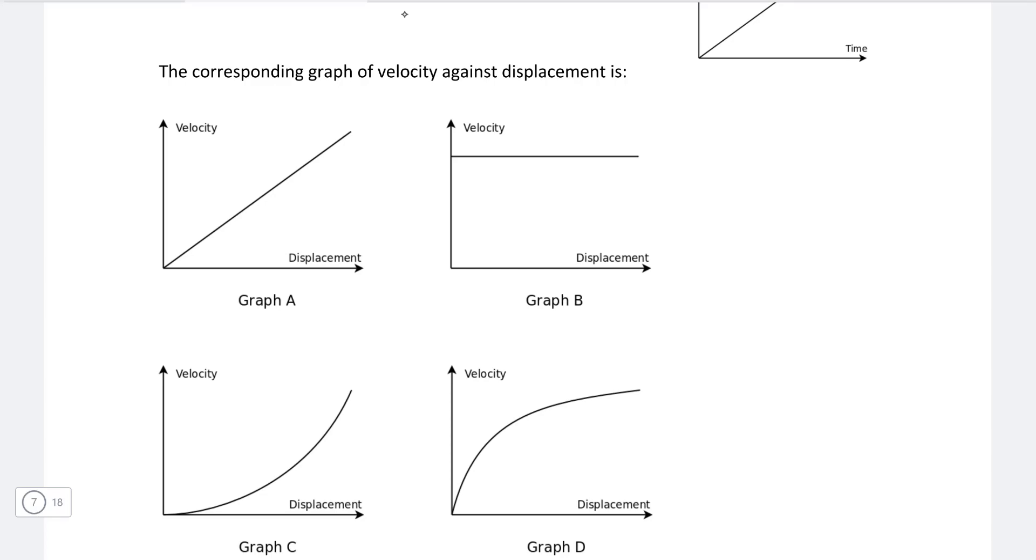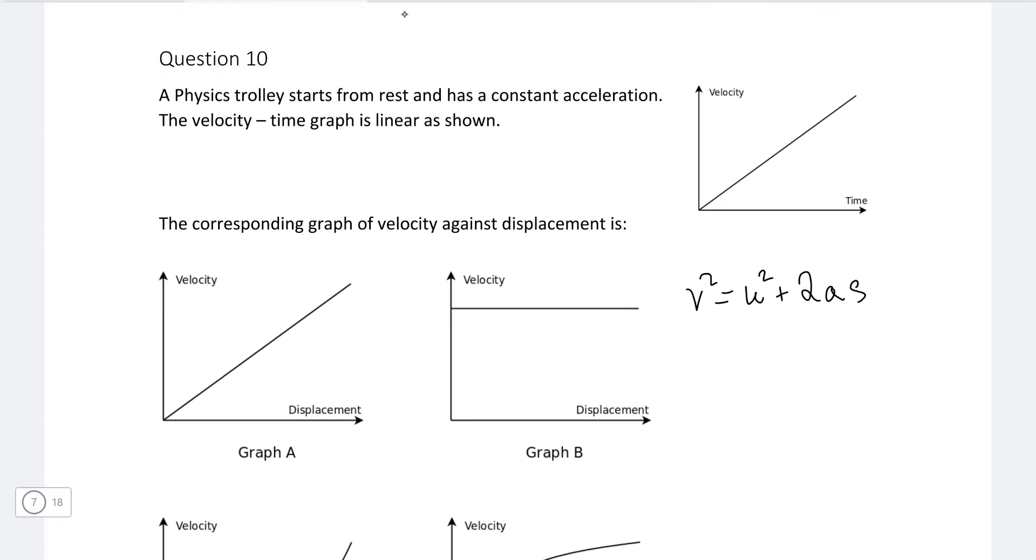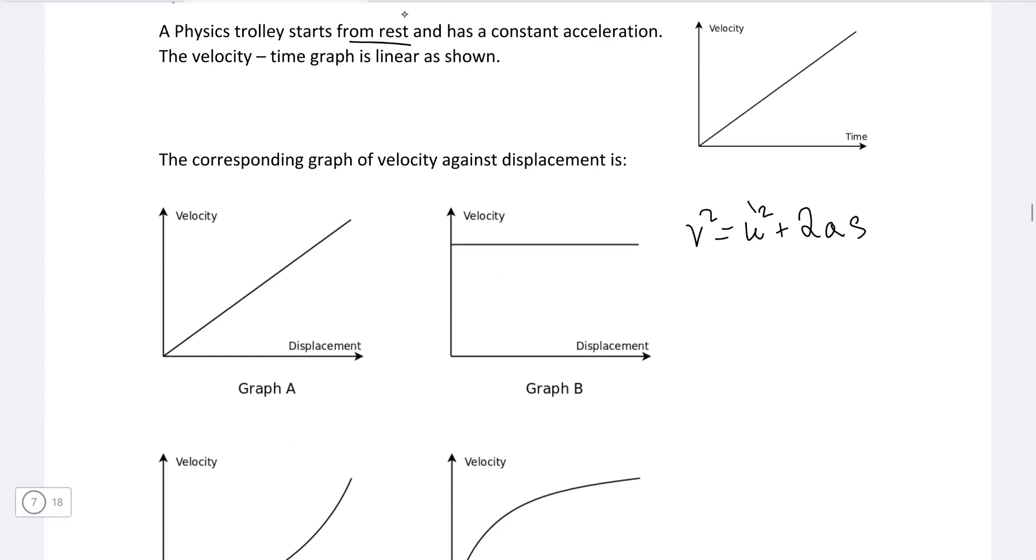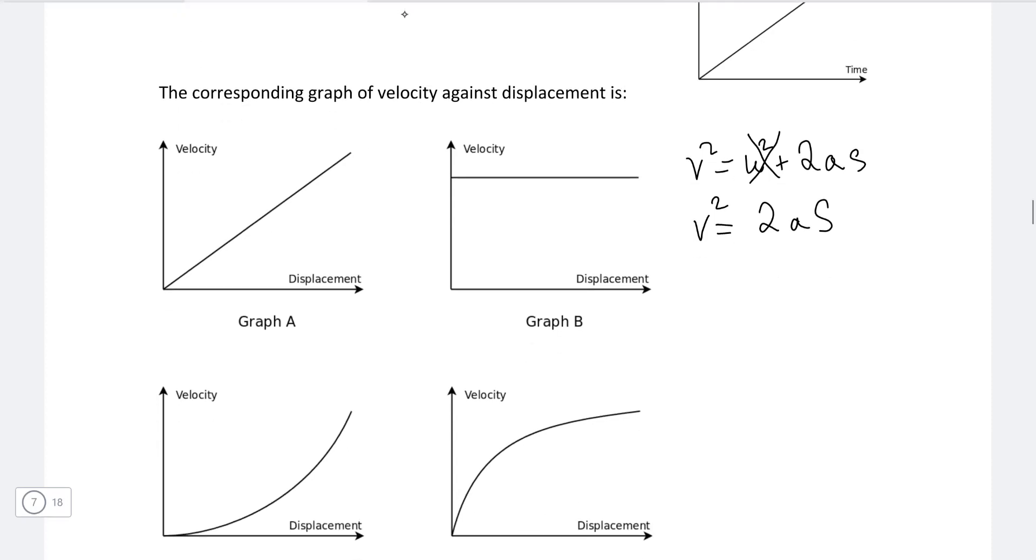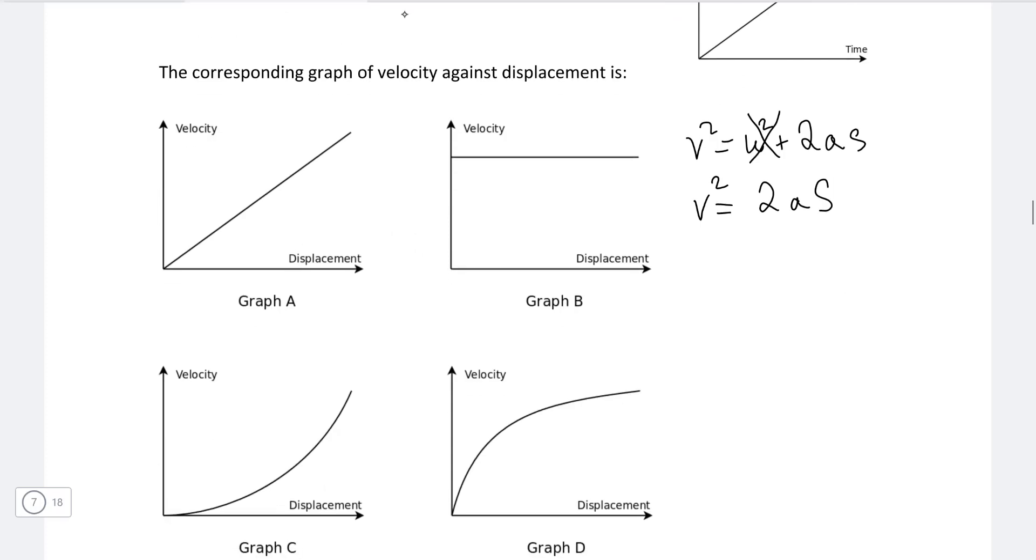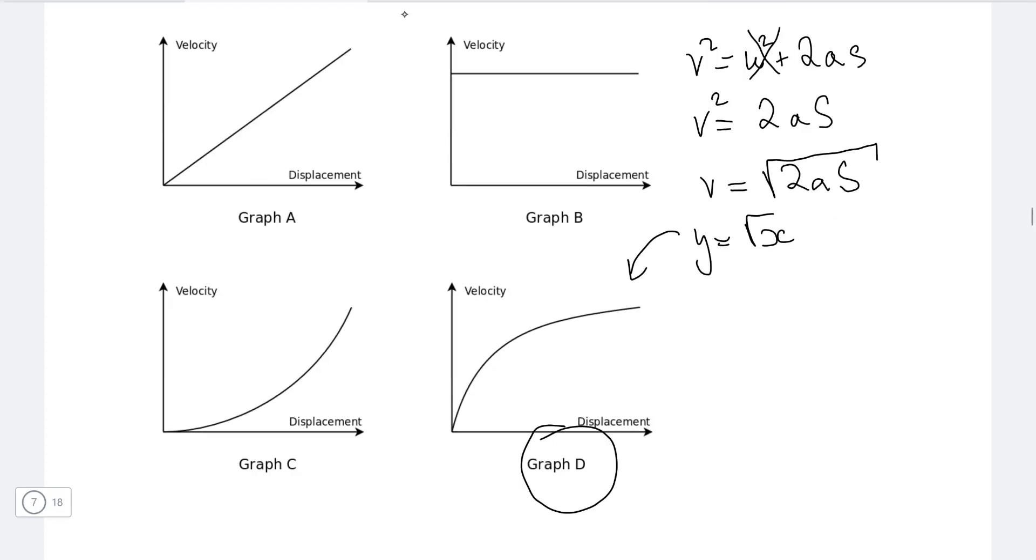This here is a really good question. So the equation that links them together is that v squared is equal to u squared plus 2as, where s is the displacement. Now because the question says that it starts from rest, we can just ignore u squared, meaning that v squared will be equal to 2as. The acceleration is constant as well. So I'm going to square root this: v will be equal to the square root of 2as. Now in maths you've probably seen that y is equal to the square root of x has a shape that is similar to this one here, and D is the correct answer because it's just a square root graph where our x, if you will, is just 2as.